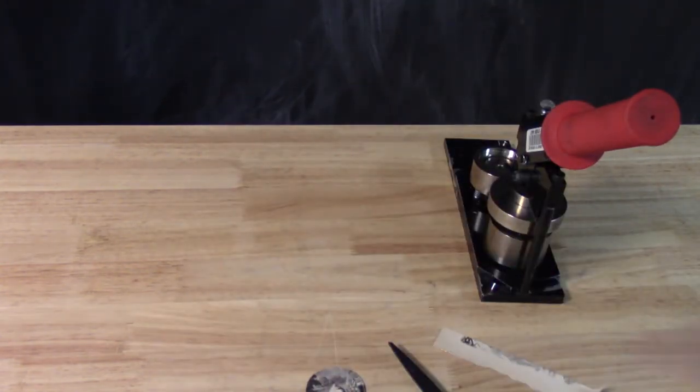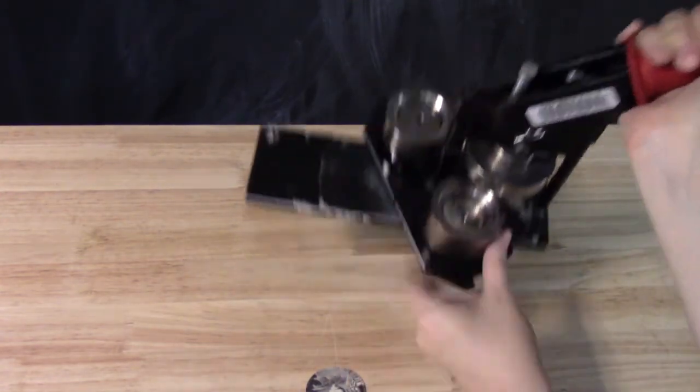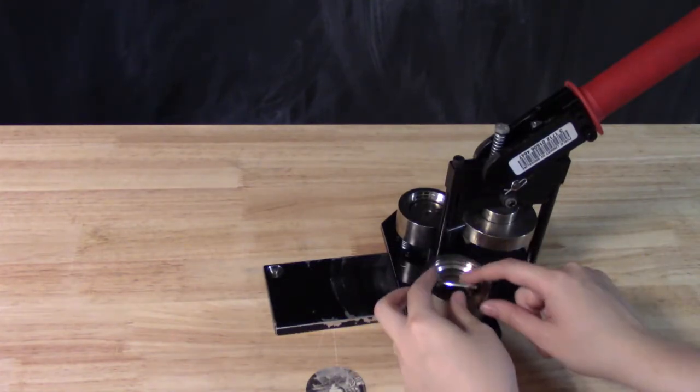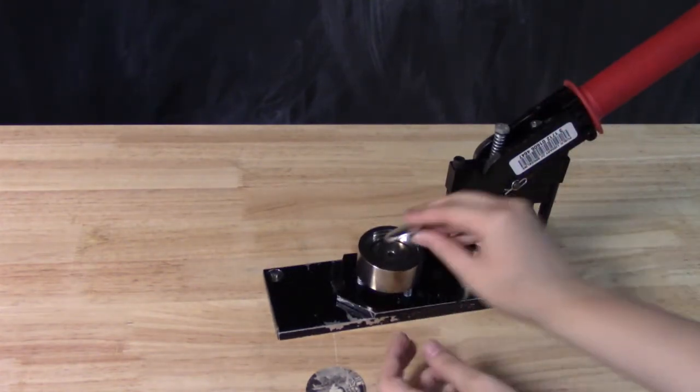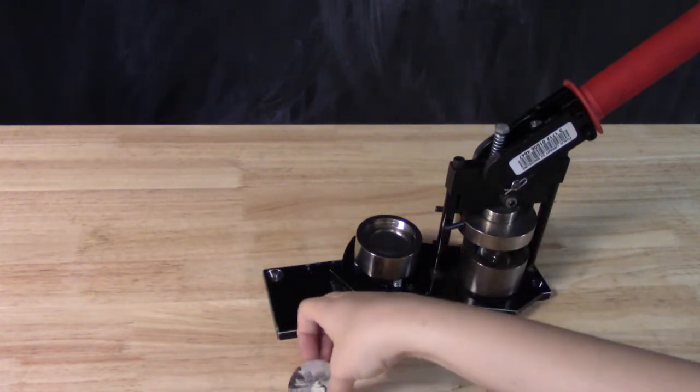Now it's time to create your button. You'll notice that the button maker has two circular compartments that spin underneath the lever. Grab a button front, that's the metal piece without a pin, and place it smooth side up into the compartment that it fits into without wiggling when you touch it.